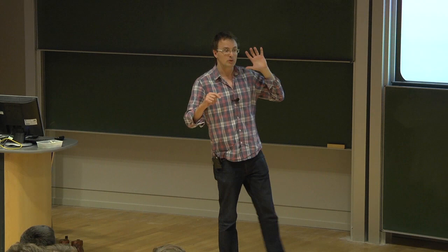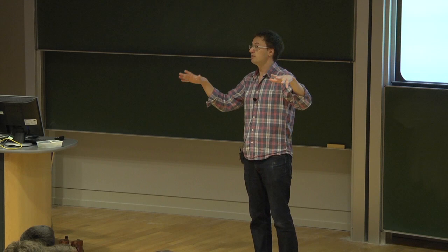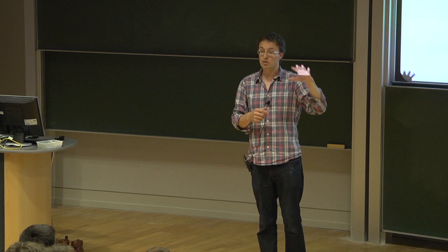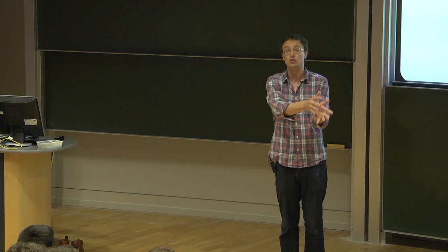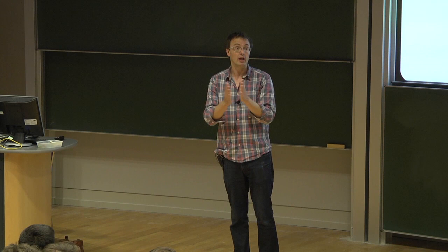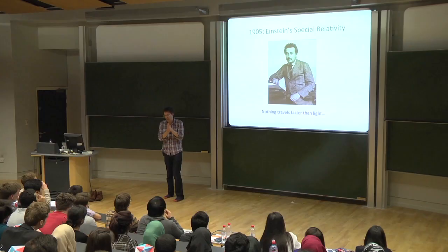1905 was a good year for Einstein. He wrote three papers, each of which revolutionised a different area of physics. One proved for the first time that atoms existed. Another started off quantum theory. But the paper I want to tell you about is a paper about a theory called special relativity. Einstein has two theories of relativity — the first is the special theory in 1905, and the second is the general theory of relativity in 1915.